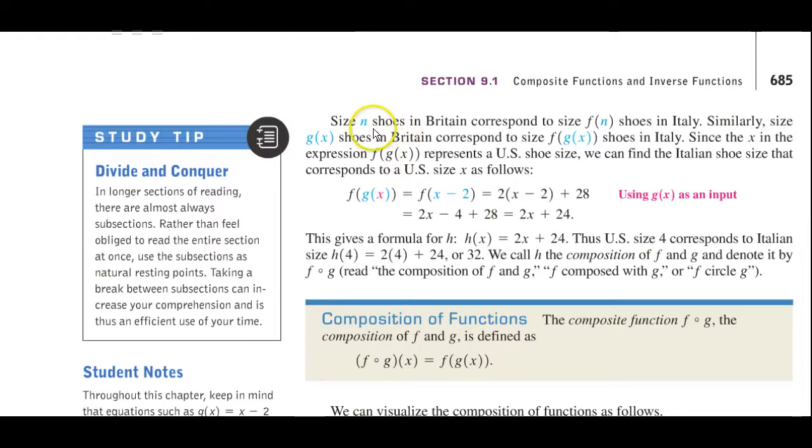So, the size n shoe in Britain corresponds to a size f(n) shoe in Italy. Similarly, size g(x) shoes in Britain corresponds to, now here's where you get the composite, the f(g(x)) shoes in Italy. Since the x in the corresponding function represents a U.S. shoe size, we can find the Italian shoe size, which corresponds to a U.S. size x, as the following.